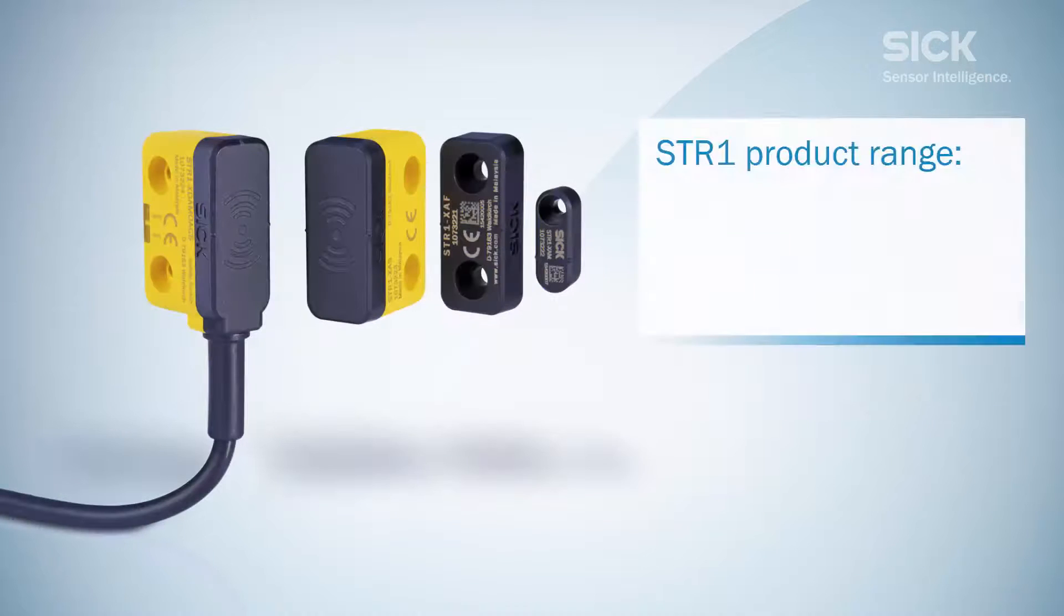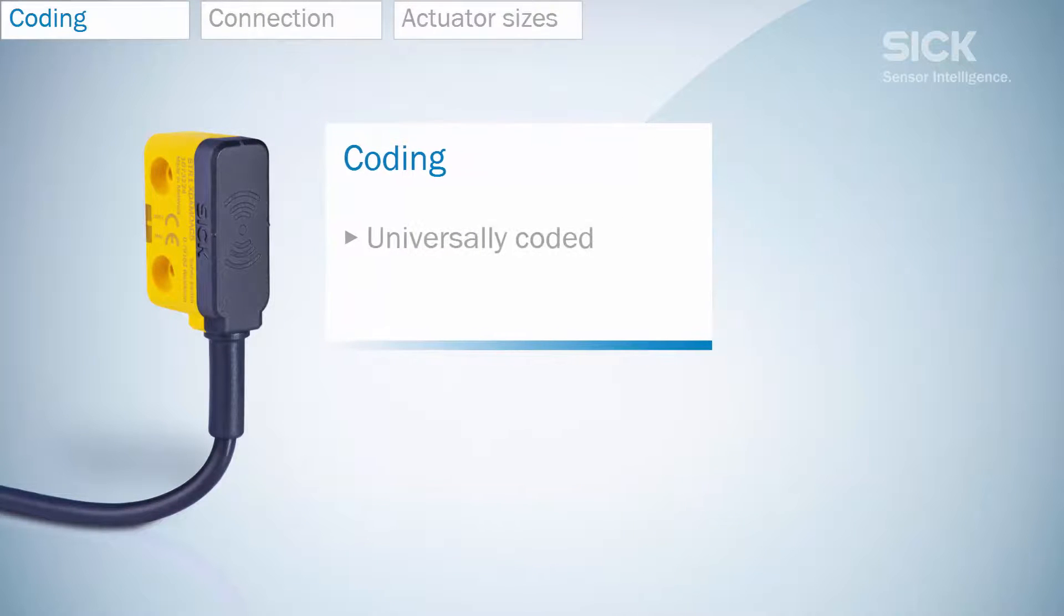To fit in a wide range of applications, the STR1 portfolio varies in coding, connection, and actuator sizes. The sensor is available in three coding versions: universally coded, unique coded, and permanently coded.